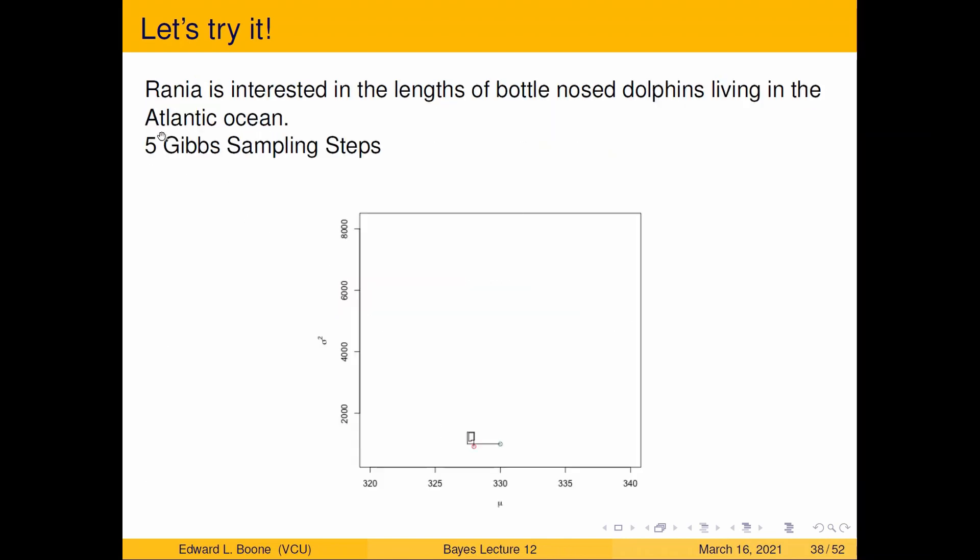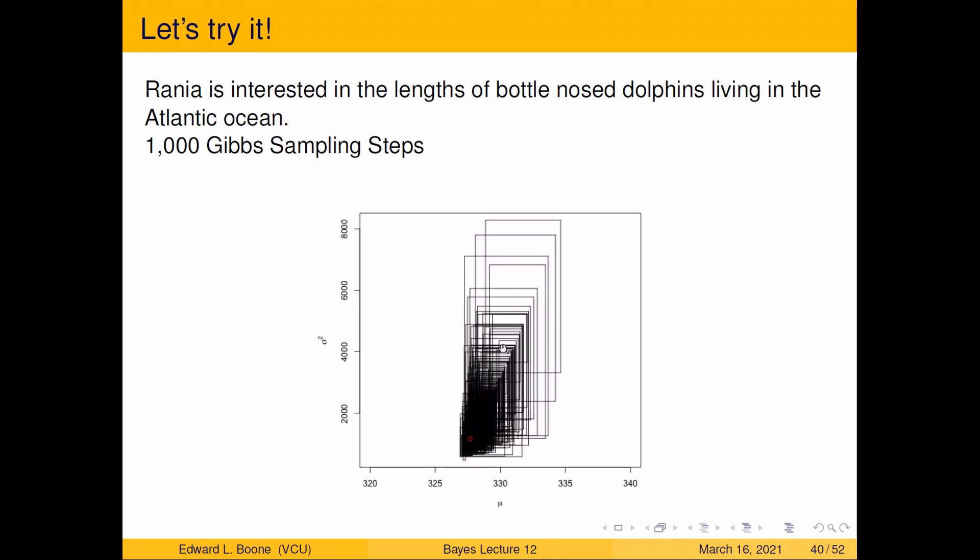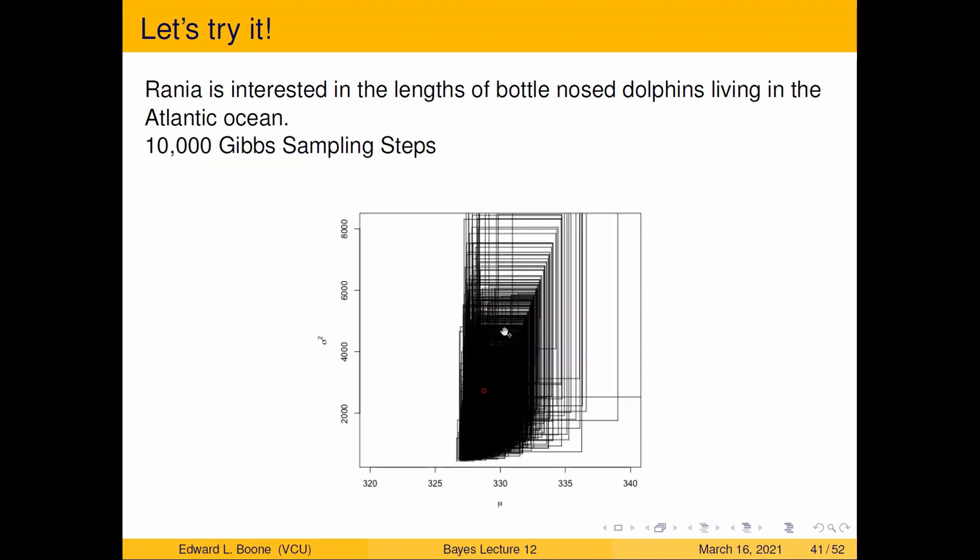So what does this do? So if I went five steps, you can see the green is where I started, the red is where I stopped. I move here and I move that direction. I'm moving in perpendicular directions every time. So every time I go, I'm moving in a perpendicular direction because this axis is mu, this axis is sigma squared. Now, if I increase that, if I went to a hundred, I started at the green dot, ends at the red dot, and I sampled, I went to all these places in between here. I can go more and fill it in more and even more.